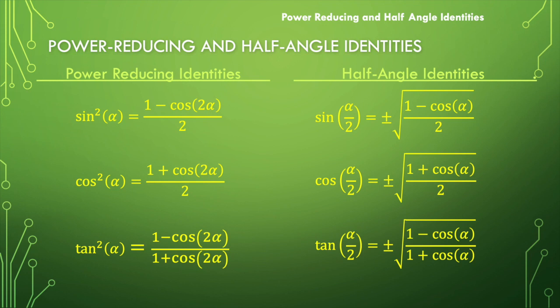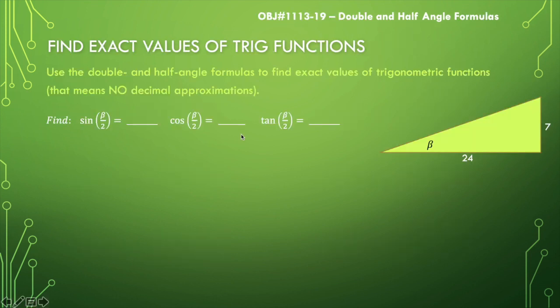Let's jump in and use our half-angle identities. Here we have a right triangle with an acute angle beta. Opposite angle beta we have a side of 7, and adjacent to beta we have a side length of 24. With this situation, we are asked to find sine of beta over 2, cosine of beta over 2, and tangent of beta over 2.